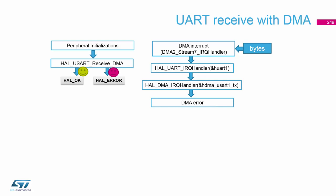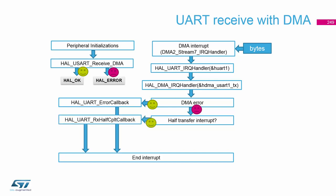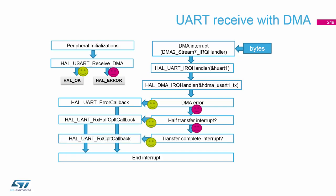In the HAL interrupt handler, we check for a DMA error — if yes, we end up in the USART error callback. If not, we check for a half-transfer interrupt and call the half-transfer callback if triggered. Then we check for the transfer complete interrupt and go into the transfer complete callback, then end the interrupt.